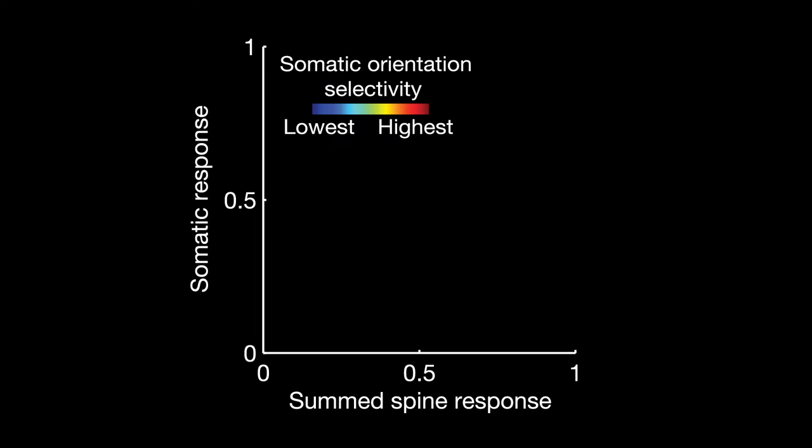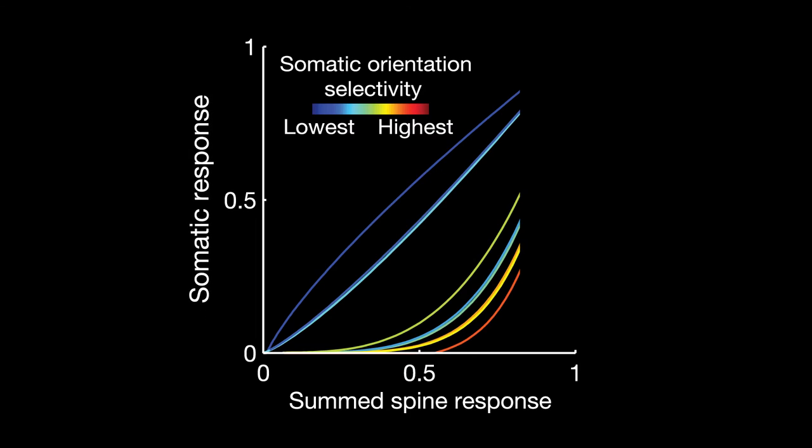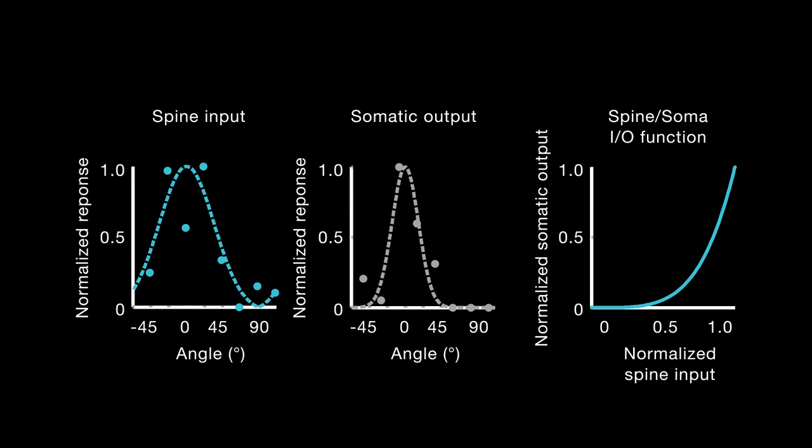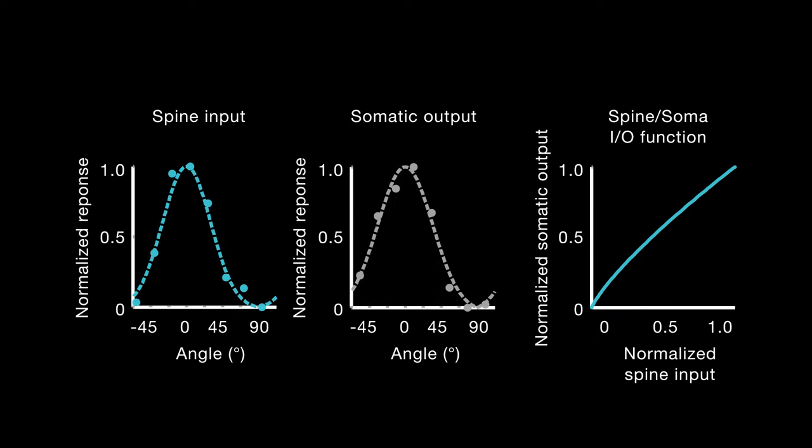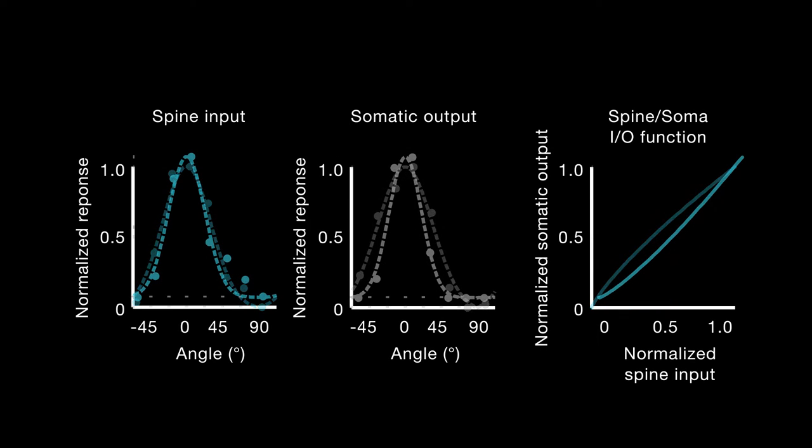Instead, selectivity was related to how a neuron's output compared with its input. Some neurons fired far fewer action potentials than expected based on the input they received, indicating that the neurons were filtering out some input.